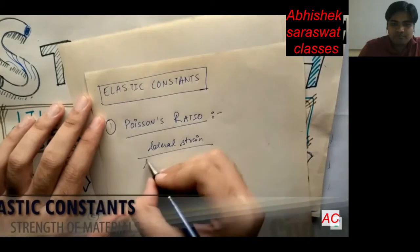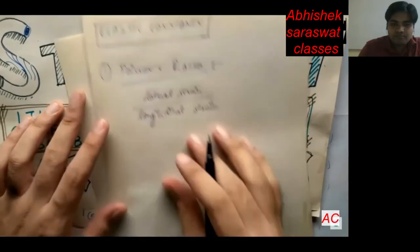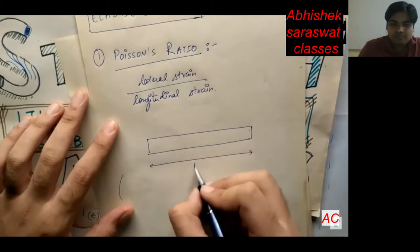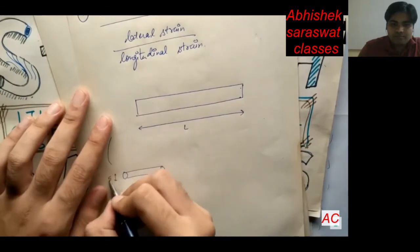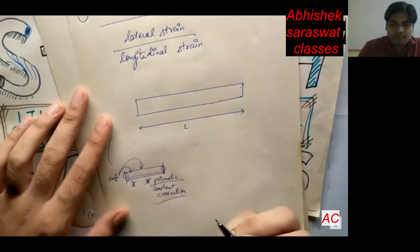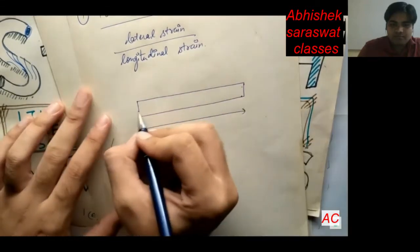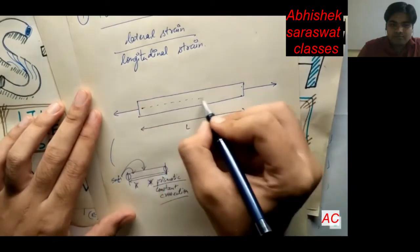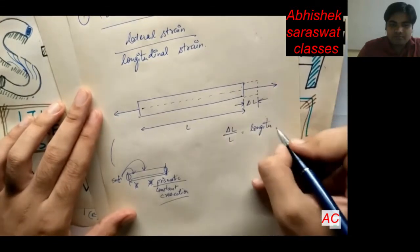Poisson's ratio is the ratio of lateral strain divided by the longitudinal strain. Suppose we have a prismatic bar of length L. A prismatic bar is a bar having a constant cross-section throughout its length. For example, if it's a circular prismatic bar with a diameter of 5 mm, that diameter remains 5 mm throughout. Longitudinal strain is the change in dimension in the direction of the applied load, so delta L divided by L equals the longitudinal strain.